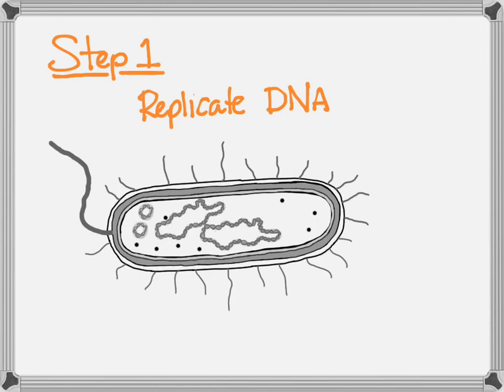This includes that one big piece of DNA that we call the bacterial chromosome. It also includes the smaller chunks of DNA called plasmids, which exist outside the bacterial chromosome. In the first step, it all gets copied.